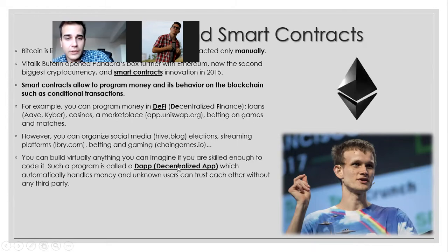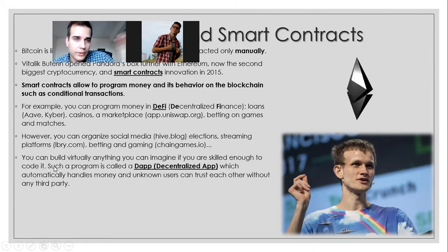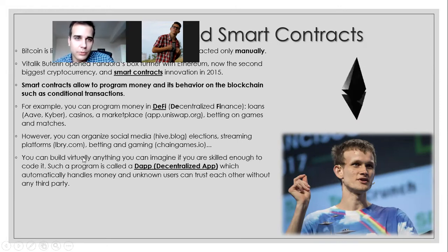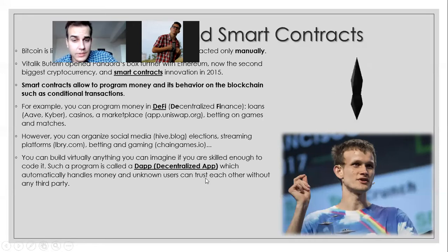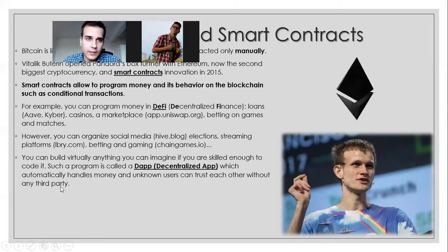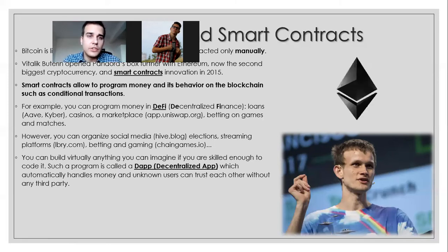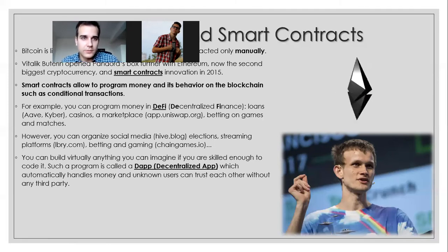I've already tried some of this. Uniswap I use all the time — it's working perfectly just on the code. You can build virtually anything you can imagine if you are skilled enough to code it. You can decentralize anything you want, but you need to be a good programmer. Such a program is called a DApp — decentralized application — which automatically handles money, and unknown users can trust each other without any third party.